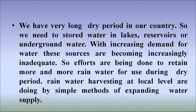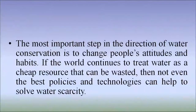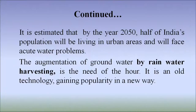Rainwater harvesting at local levels is done by simple methods of expanding water supply. The most important step in the direction of water conservation is to change people's attitudes and habits. If the world continues to treat water as a cheap resource that could be wasted, then not even the best policies and technologies can help to solve water scarcity. It is estimated that by the year 2050, half of India's population will be living in urban areas and will face acute water problems. The augmentation of groundwater by rainwater harvesting is the need of the hour. It is an old technology gaining popularity in a new way.